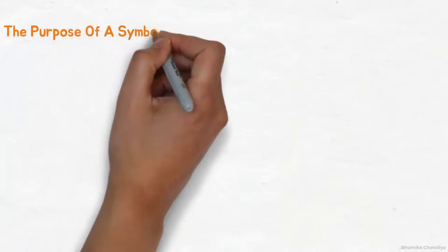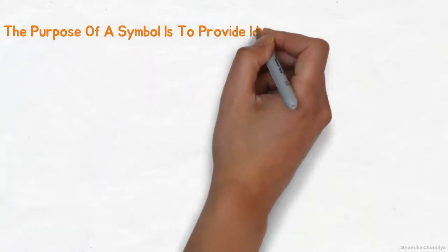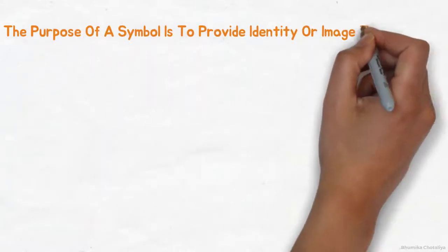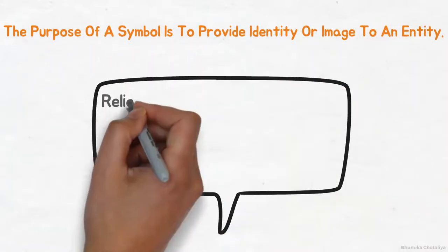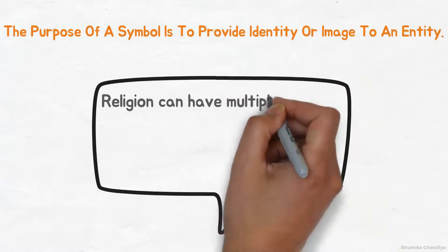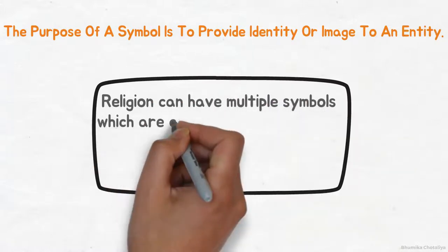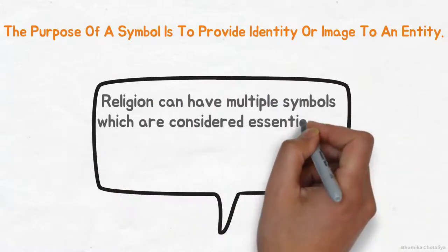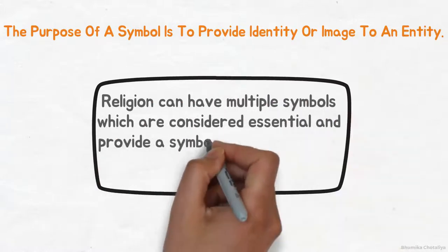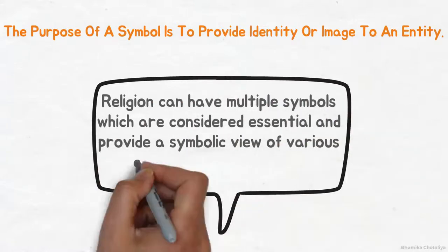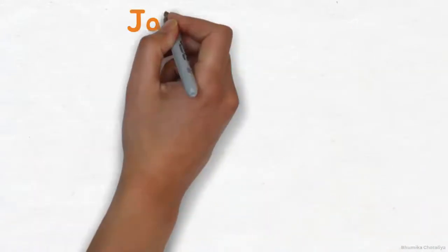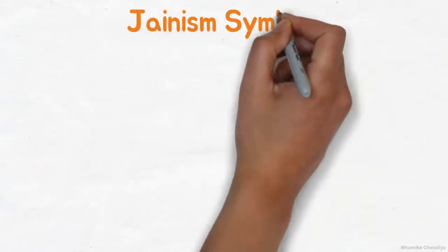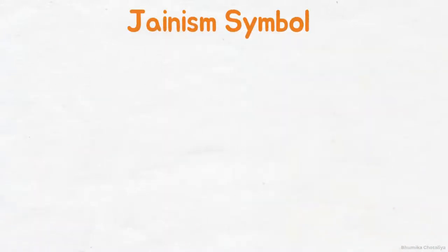The purpose of a symbol is to provide identity or image to an entity. Religion can have multiple symbols which are considered essential, and they provide symbolic views of the various core values and concepts. Jainism has symbols that signify different core values.